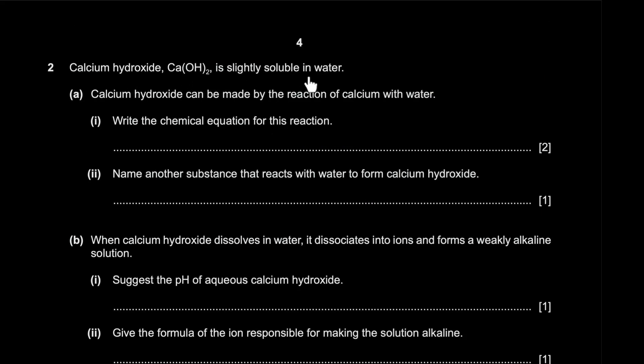Calcium hydroxide is slightly soluble in water. Calcium hydroxide can be made by the reaction of calcium with water, right? The chemical equation for this reaction. So calcium can readily react with water to form calcium hydroxide and hydrogen gas. And to balance it off, I think if I put a two over here, I think we're balanced.